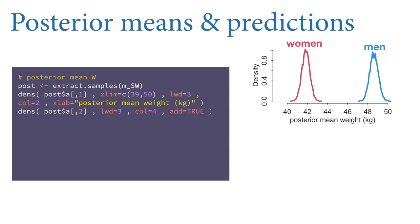Now let's do some post-processing. As I keep saying, usually the unknowns themselves are not what we want. The A1 and A2 in this model are not what we're after — we have to do comparisons of those posterior distributions. Consider, for example, the difference in mean weight. The difference in mean weight is not in the posterior; the mean weight of each category is, but we'd like to look at the contrast — the difference between category one and category two.